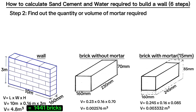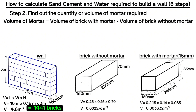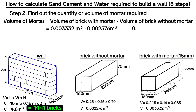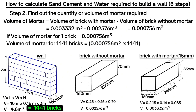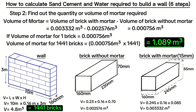The second step is to find out the quantity or volume of mortar you need, which you get by saying that volume of mortar is equal to volume of brick with mortar minus volume of brick without mortar. What you remain with is the volume of mortar that you need. In this case, this is 0.003332 meters cubed minus 0.002576 meters cubed. This is the mortar required for one brick. Since we need 1,441 bricks, we get mortar for one brick multiplied by 1,441 bricks to get 1.089 cubic meters of mortar.